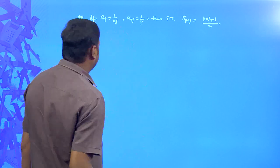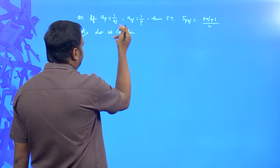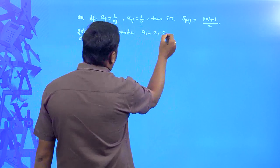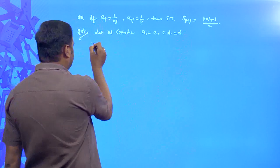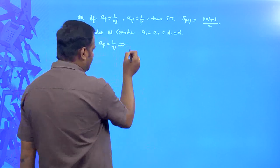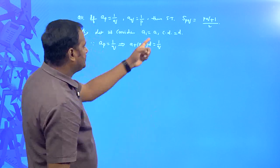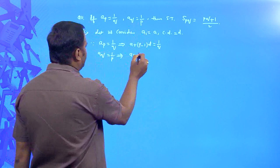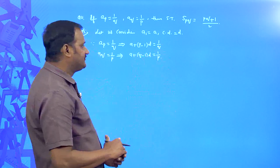I will just go along with the given information. Let us consider an AP with first term a₁ = a and common difference d. The first condition given is that the p-th term equals 1/q, which means a + (p − 1)d = 1/q. The second condition is that the q-th term equals 1/p, meaning a + (q − 1)d = 1/p. We will have to solve these two equations for a and d.